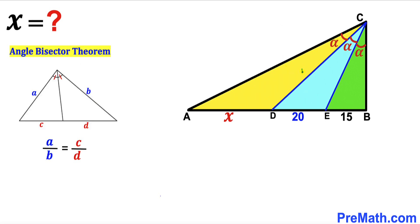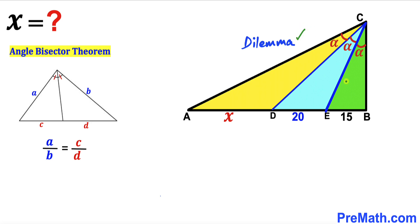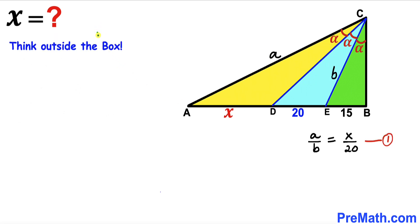In the previous step we used CD as our angle bisector. Now we want to use CE as our angle bisector as well, to involve the yellow triangle and find X. However, there is a dilemma: if we use CE as the angle bisector in this configuration, the whole angle becomes 2 alpha, while the other angle remains just alpha. These angles are not congruent, so we need to think outside the box.